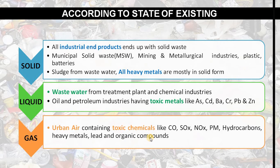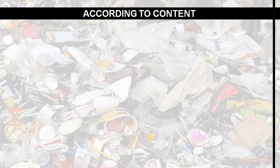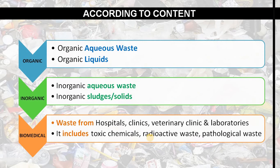For gaseous waste, urban air contains toxic chemicals like CO, SOx, NOx, PM, hydrocarbons, heavy metals such as lead, and organic compounds. The urban air which contains these toxic chemicals is also harmful to nature as well as to human and animal life.